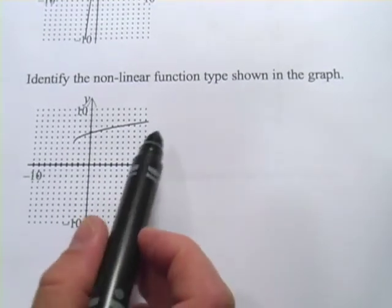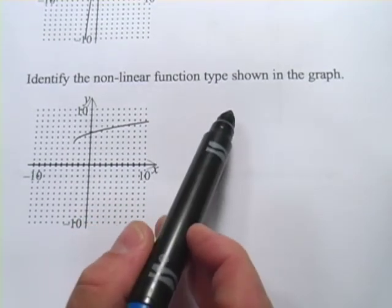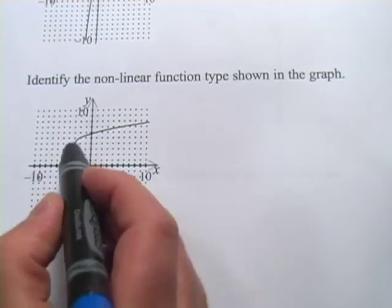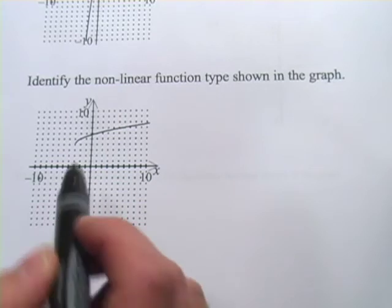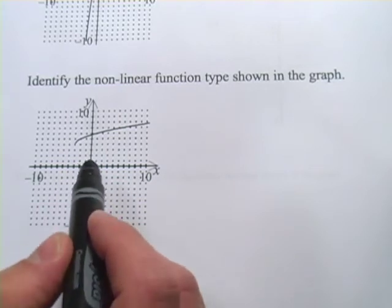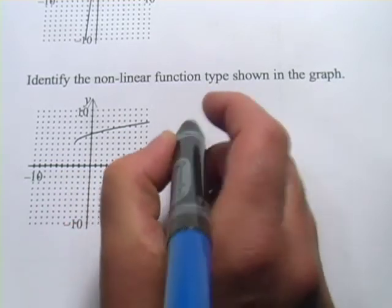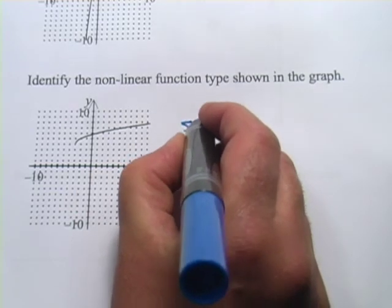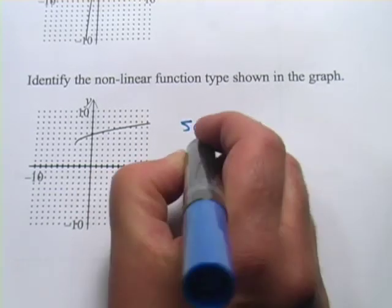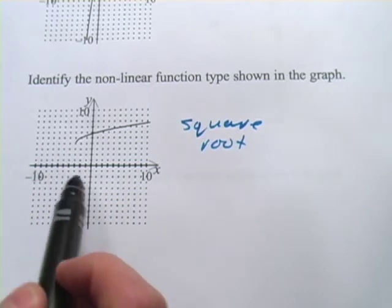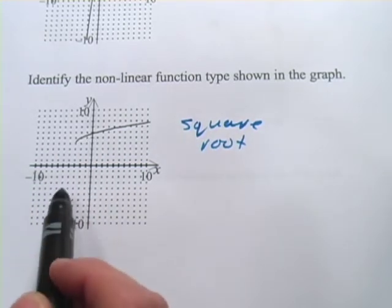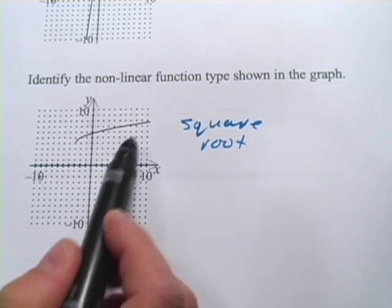It's really just about recognizing the shapes right now. The next one says, identify the nonlinear function type shown in the graph. And we have this kind of gently sloping thing. Well, you should recognize this basic shape as the square root function. So correct answer for this one, square root. It's not just Y equals the square root of X, because it's been translated on this graph up to a different point, but the shape is the same.